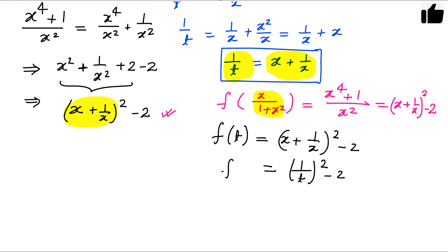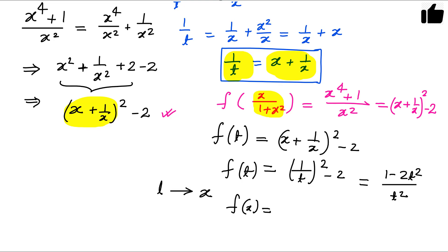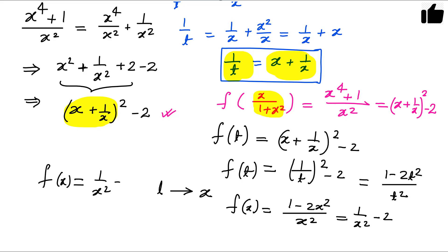So what is f(t)? This is simply 1 minus 2t square divided by t square. This is true for all t, so we can replace t with x. Therefore, f(x) equals 1 minus 2x square divided by x square, or equivalently, 1 by x square minus 2. So f(x) equals 1 by x square minus 2.